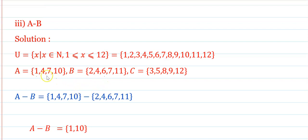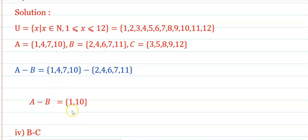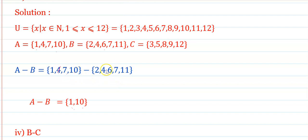Next, A minus B: checking A = {1, 4, 7, 10} against B = {2, 4, 6, 7, 11}. The element 1 is not common, so keep it. The element 4 is common — cancel it. The element 7 is also common — cancel it. The element 10 is not common — keep it. Therefore A minus B = {1, 10}.